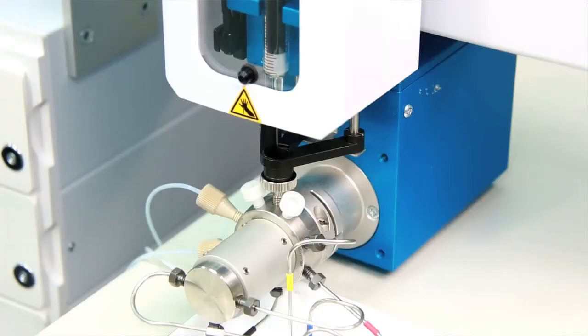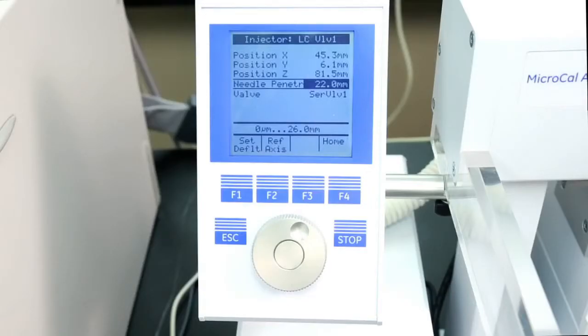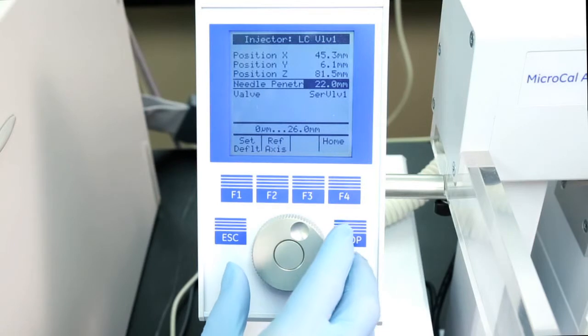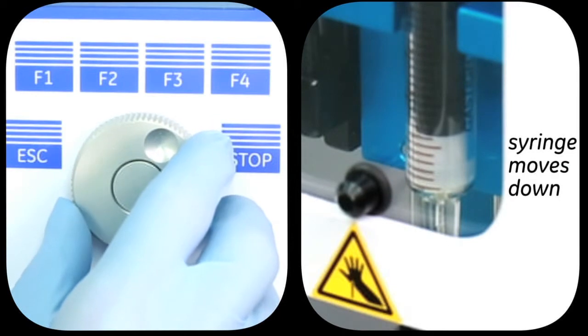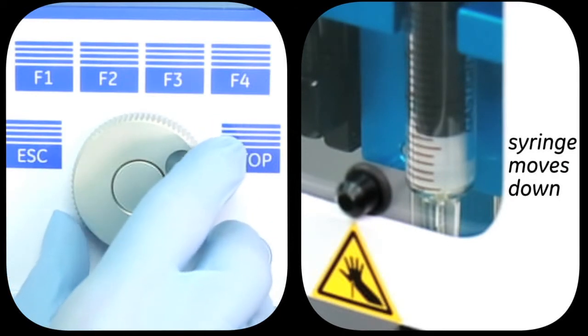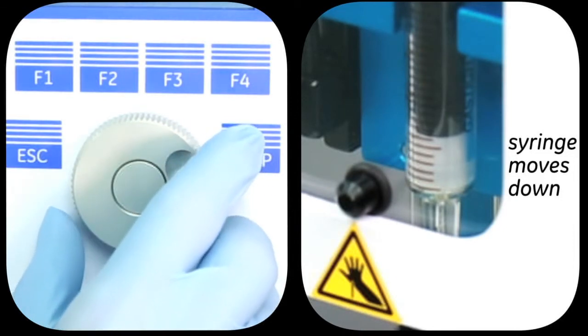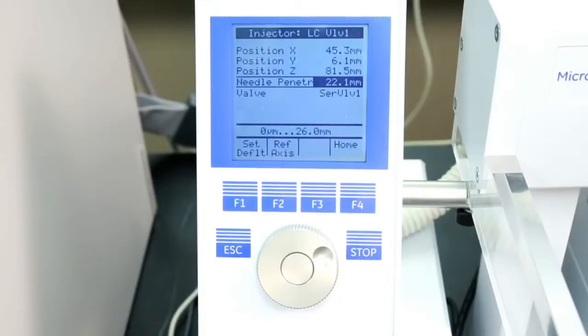Slowly rotate the outer knob to adjust the needle penetration depth. Watch carefully to make sure the needle does not bend, and listen for a click or thunk sound. You may have to rotate it once or twice. The syringe moves down stepwise into the injection port. When you hear a click or thunk sound inside the injection unit, or the needle starts to bend, you know you hit the bottom.